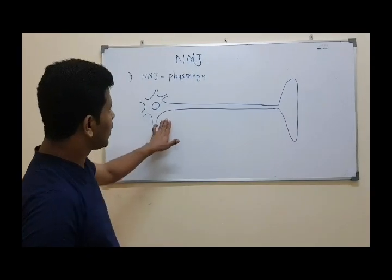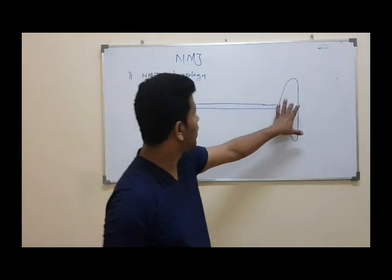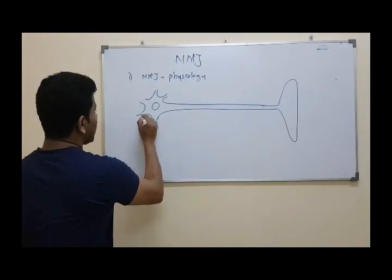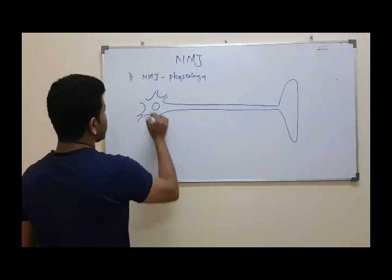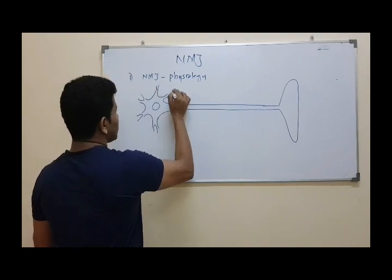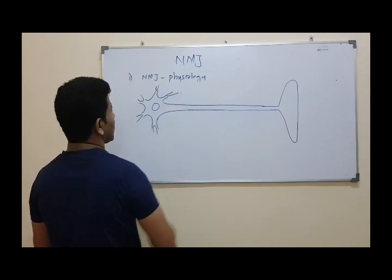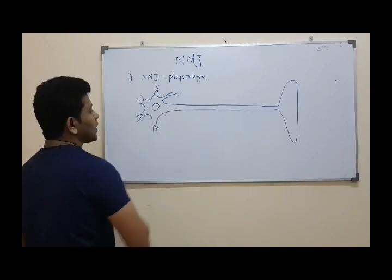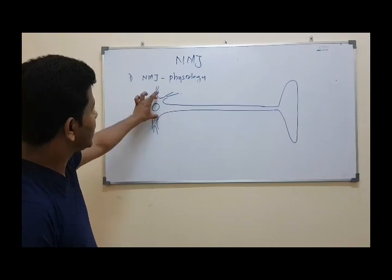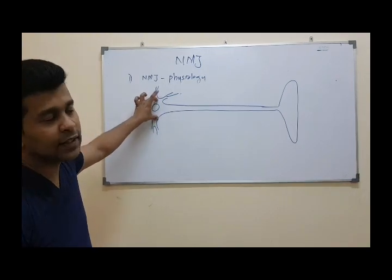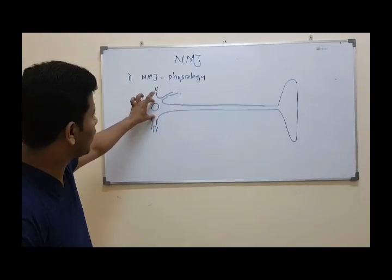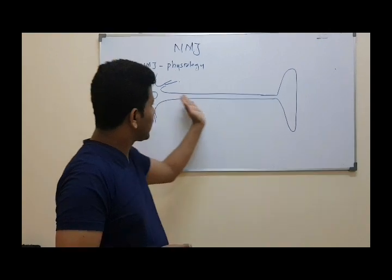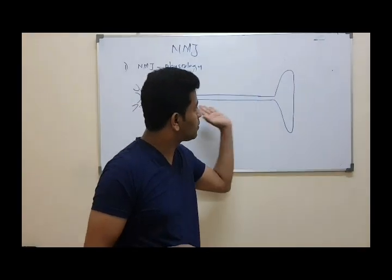This is the cell body, this is the terminal, this is the axon, these are the dendrites, this is the nucleus, and this is the synthesis.